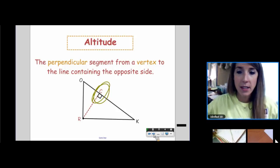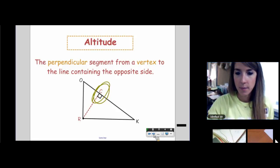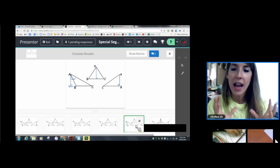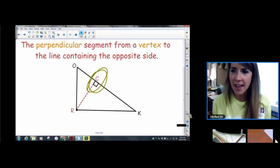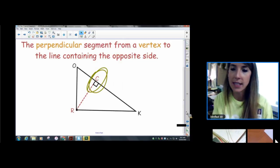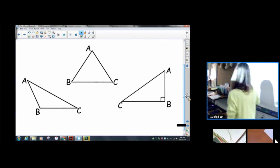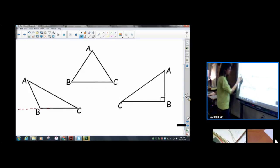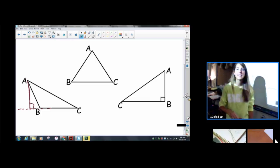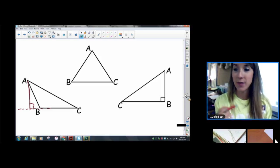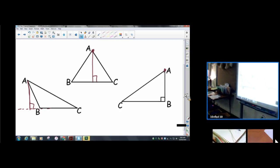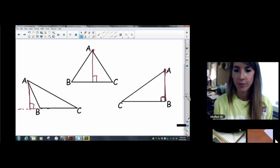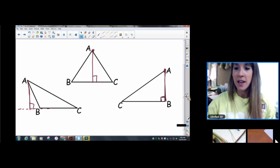It is a perpendicular segment from a vertex to the line containing the opposite side. Do you notice in the definition how it said to the line containing the opposite side? It didn't say to the opposite side like the median did. The reason is because when our triangle is obtuse, that altitude is going to fall outside the triangle. When it is acute, it will fall inside the triangle. And when it's a right triangle, where will it fall? On. So outside, inside, on.